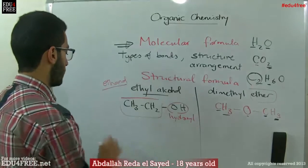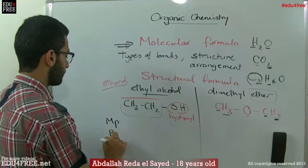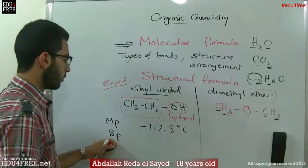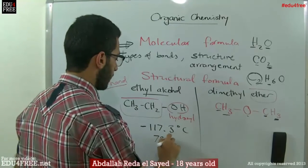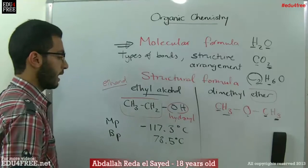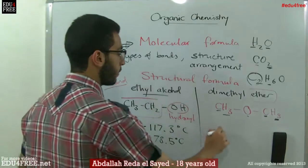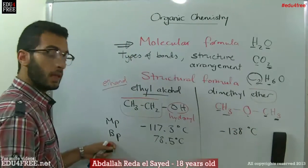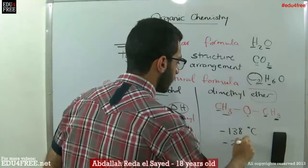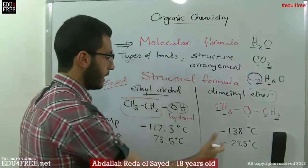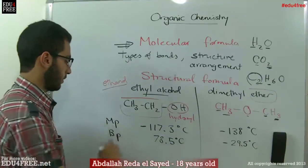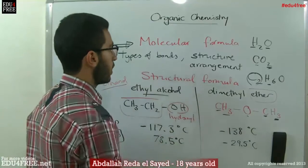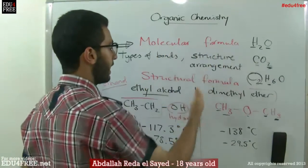Looking at the physical properties — the melting point and boiling point — ethyl alcohol has a melting point of –117.3°C and a boiling point of 78.5°C. Dimethyl ether has a melting point of –138°C and a boiling point of –29.5°C. The numbers aren't even close; there's a very great difference especially in the boiling point. So just by changing the structure, we get a great difference in physical properties — something the molecular formula alone cannot show us.